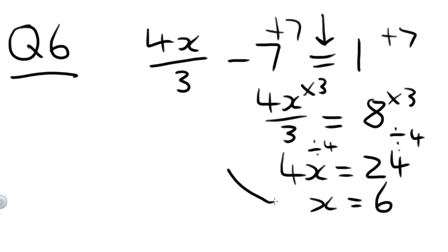Let's check it. 4 times 6 is 24. Divide by 3 is 8. 8 minus 7 equals 1. That's correct.